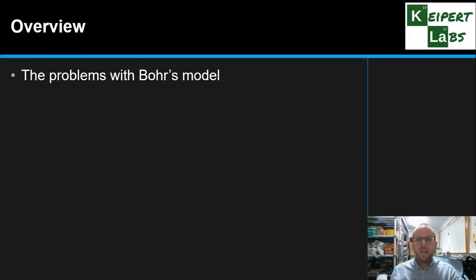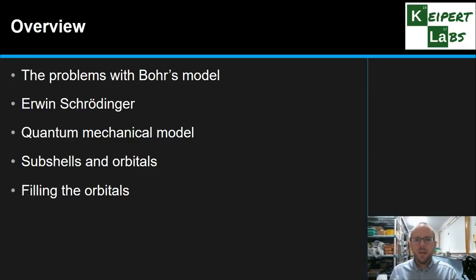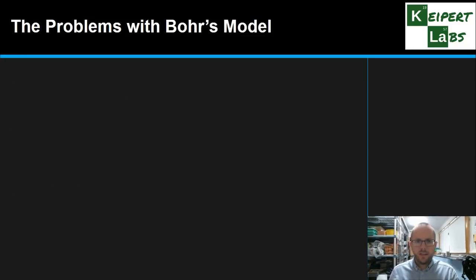We're going to start by looking at the problems with Bohr's model of the atom. We're going to introduce the man named Erwin Schrödinger, famous for his Schrödinger's cat problem you may or may not have heard of, and look at introducing the features of the quantum mechanical model which superseded Bohr's model. We're going to introduce the concepts of subshells and orbitals, and look at how we fill orbitals with electrons.